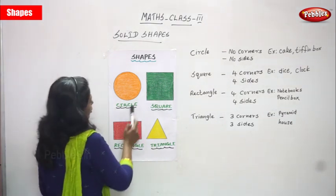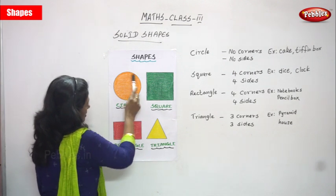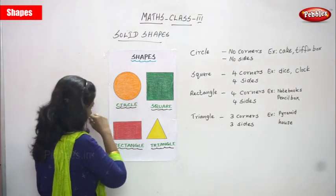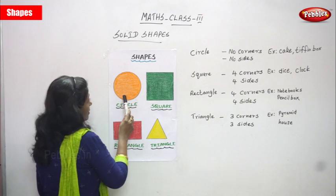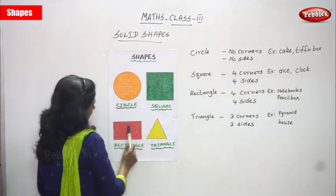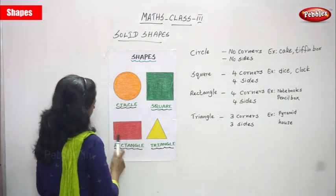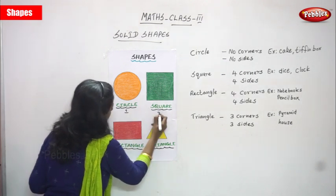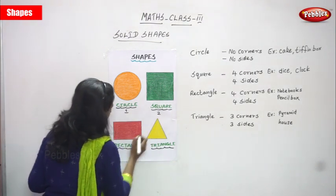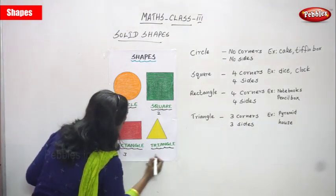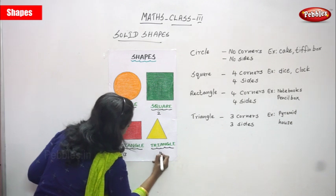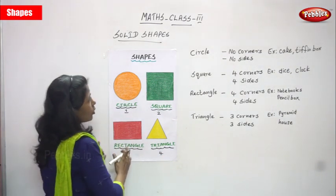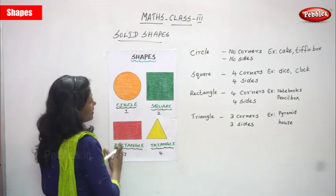So, what is this shape called? Circle. And the other one is square. The first diagram is circle, and the second one is square. Third one is rectangle. Fourth one is triangle. Okay, these are some important solid shapes.